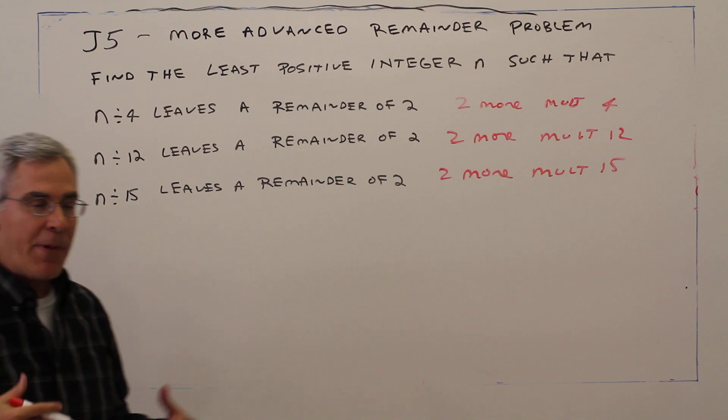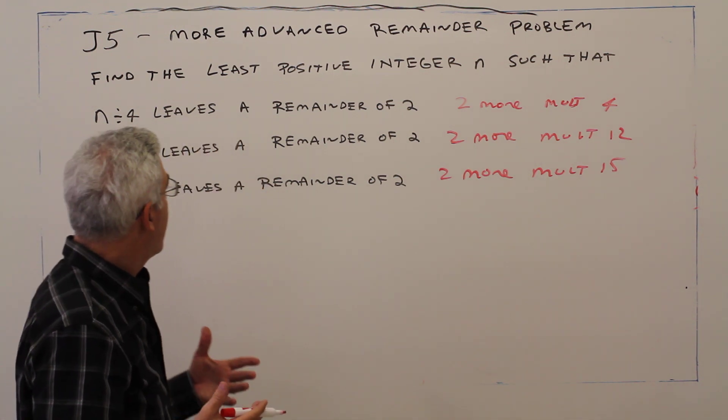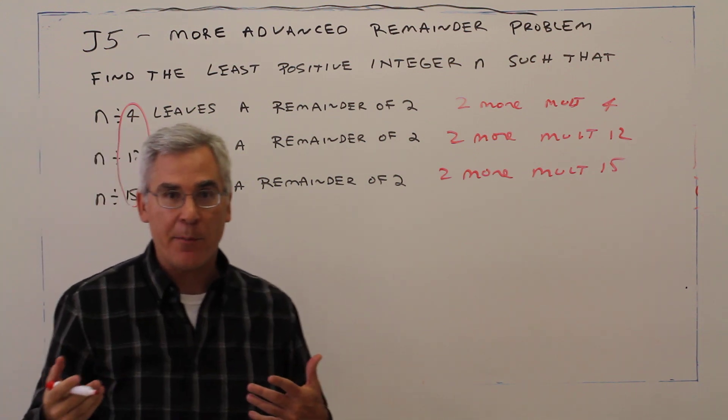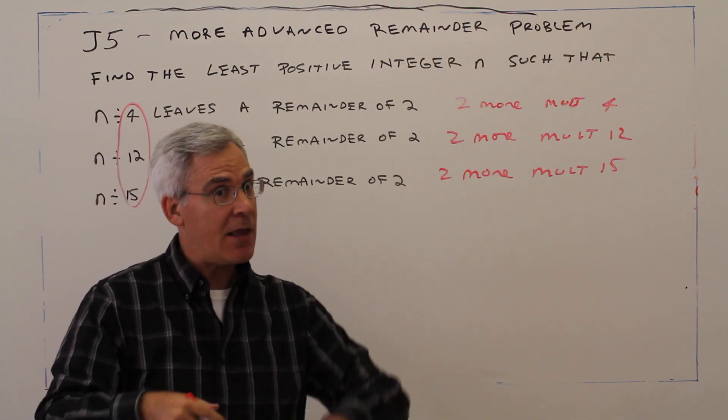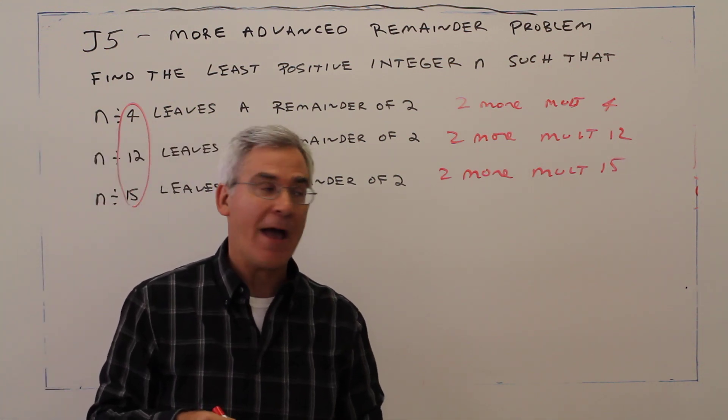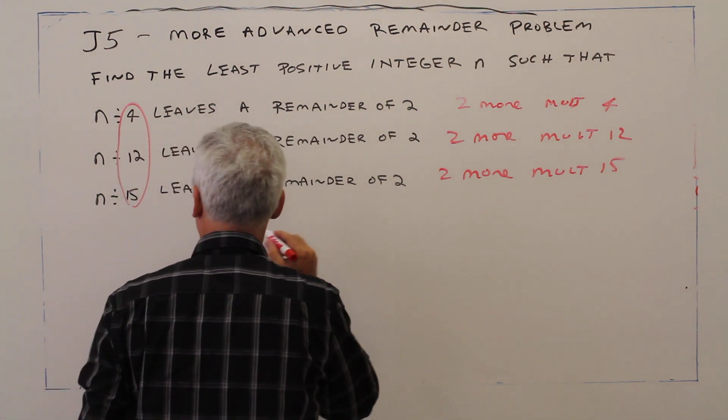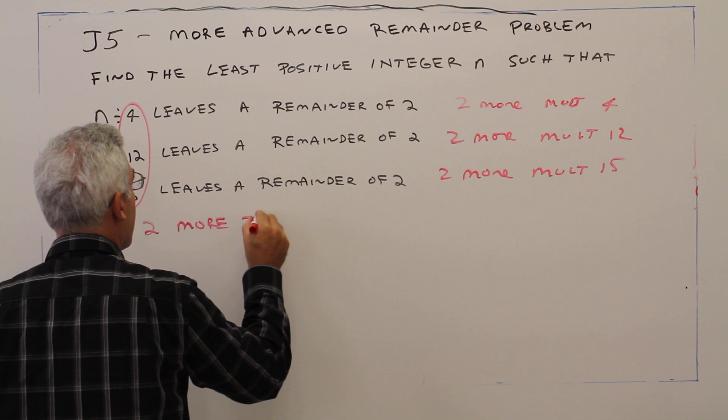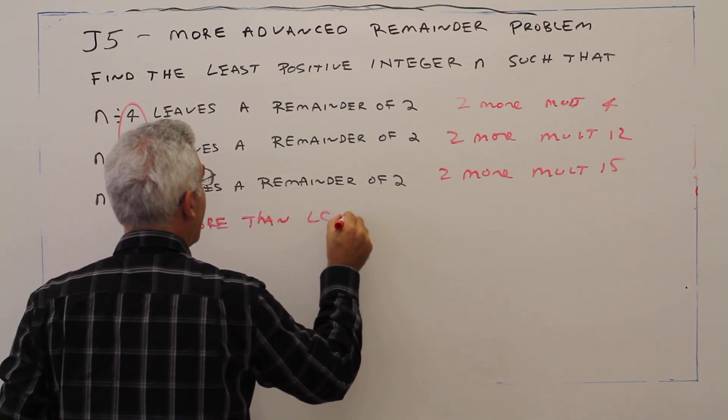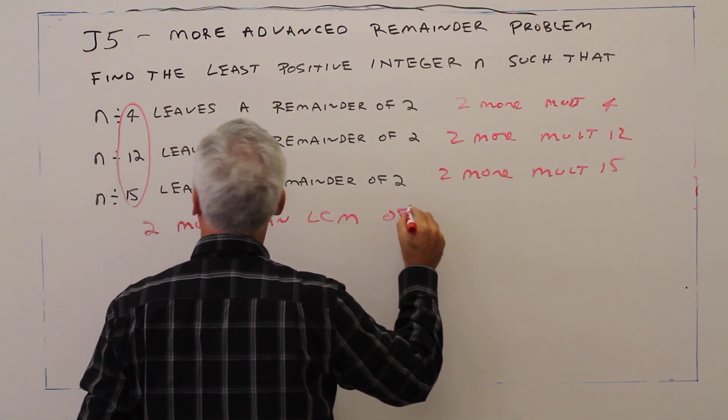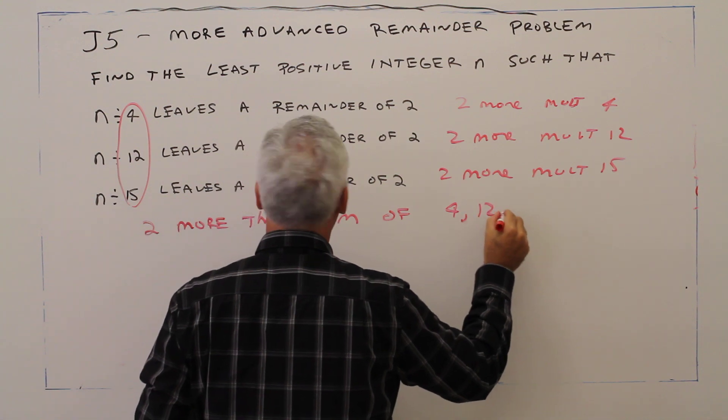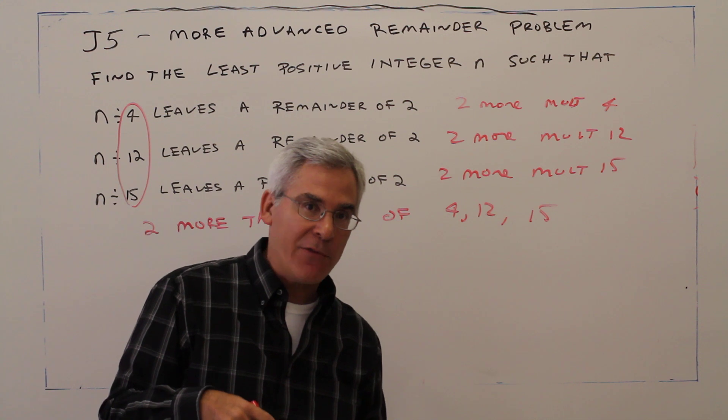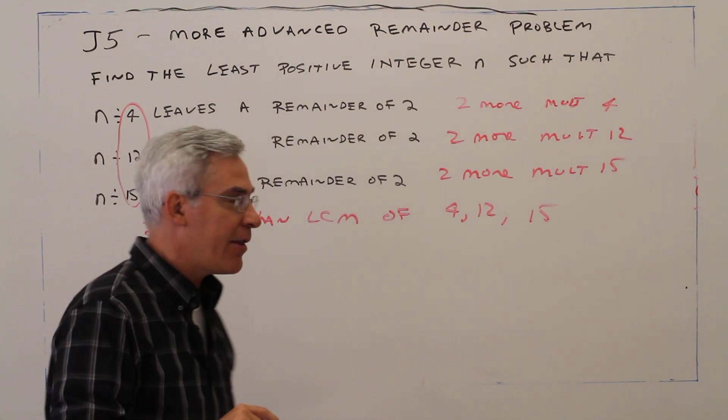Well, basically what we can do is find the least common multiple of those numbers and just be two more than that. So what we want to do is be two more than the least common multiple of 4, 12, and 15. So let's go back, find the least common multiple, add 2, and call it a day.